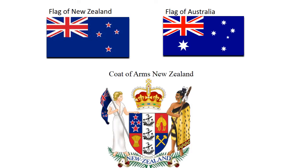You'll notice that the flag of Australia and New Zealand and the coat of arms of New Zealand all have arrangements of stars.